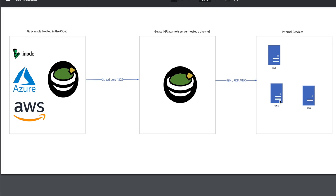In our last video I showed you how to set up a distributed install of Apache Guacamole. As shown in the diagram, we had a Guacamole instance installed in the cloud — in this case a Linode, but you can use Azure or AWS — and a local installation of the server component of Guacamole, which is GUACD, inside of our internal network. Then we connected our cloud-hosted Guacamole to use the GUACD protocol in our internal network.